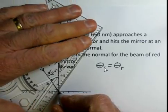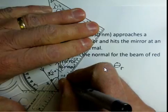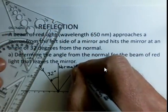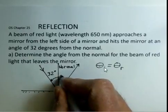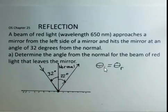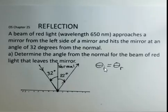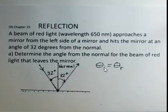If it's exactly 32 degrees for the ray approaching the mirror away from the normal, we'll have 32 degrees for the reflected ray. So nothing too dramatic or involved about that. The incident angle equals the reflected angle.